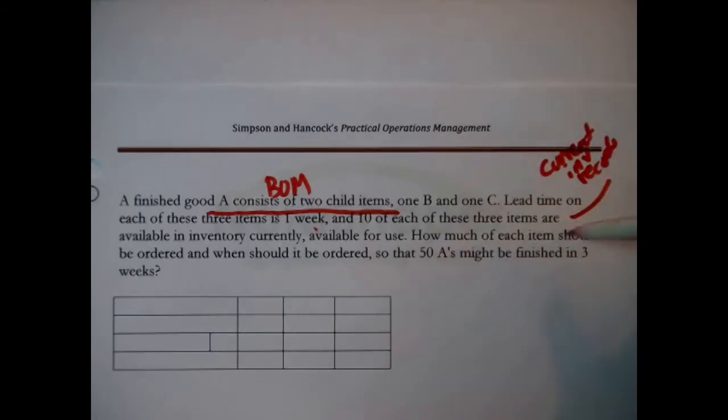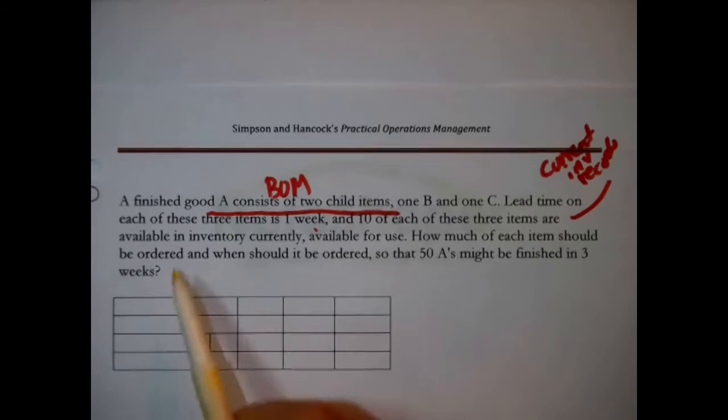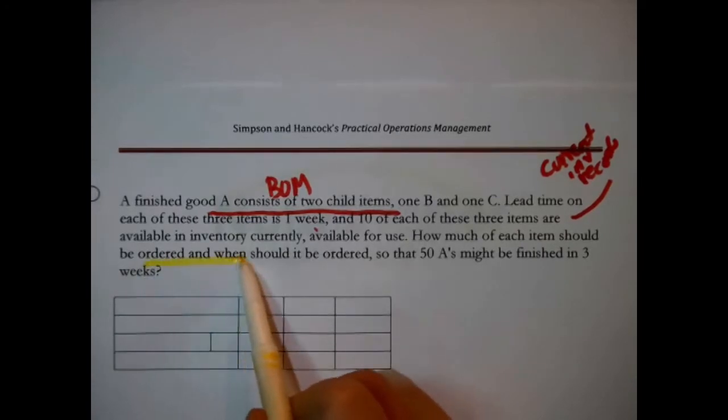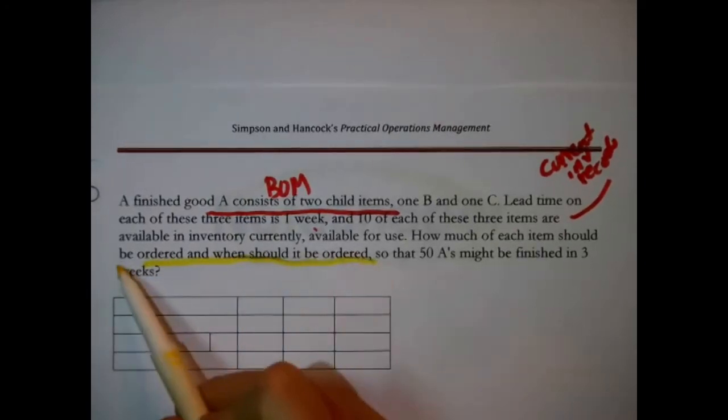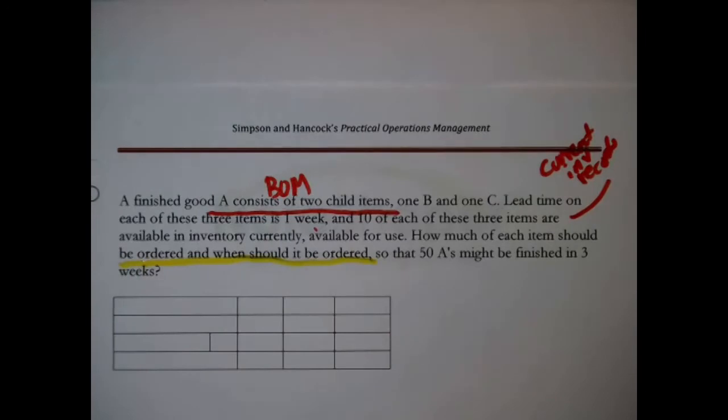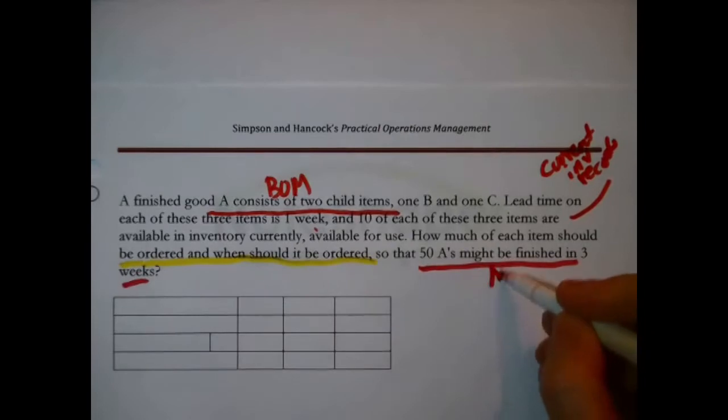How much of each item should be ordered and when should it be ordered? That is answered by material requirements planning so that 50 A's might be finished in three weeks.